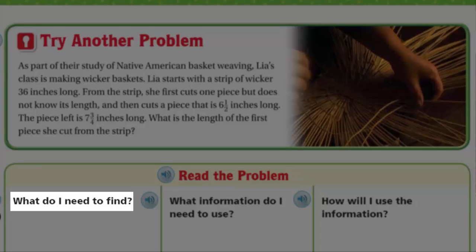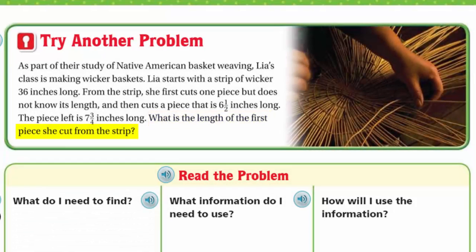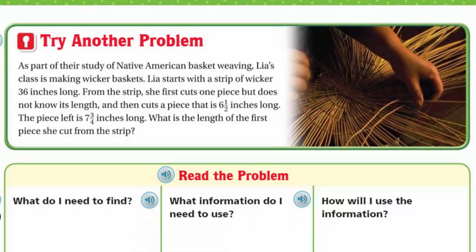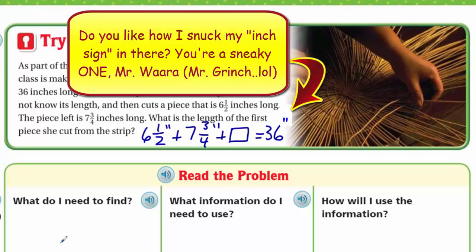First thing. What do I need to find? Yeah, it's right there in the question. It's the length of the first piece that she cut that she didn't know how long it was. What information am I going to use? Well, the information I'm definitely going to need to use is I need to use how long the strip of wicker is. In this case, it was 36 inches. I'm going to also use the one piece that she cut that was six and a half inches long. That's going to be important in my problem. And then the pieces left. Because in my mind, I would actually write this up as an equation this way. I would actually say in my mind, this is how I would read it. Six and a half inches, and I'm just going to put two little marks here, let's know those are inches. Plus the piece that was left over, that's seven and three quarters inch. Plus a piece that I don't know how long it was is going to equal to 36.